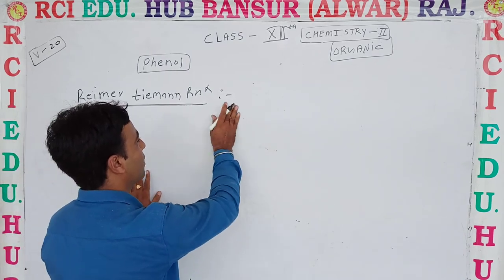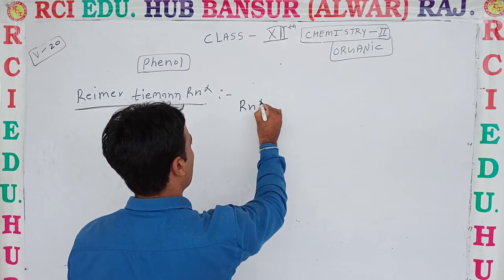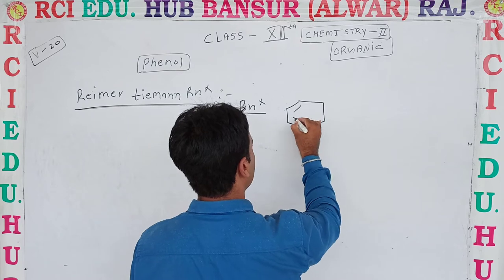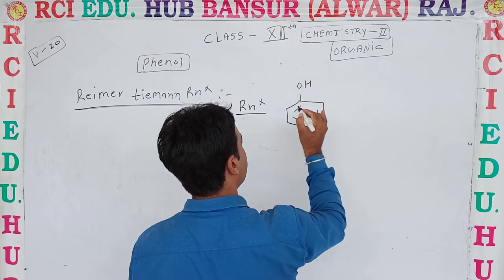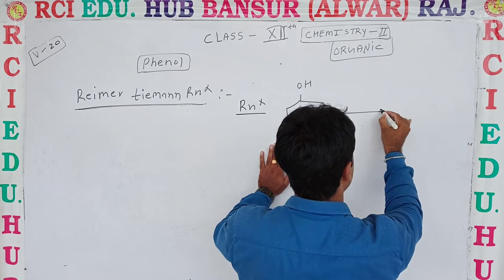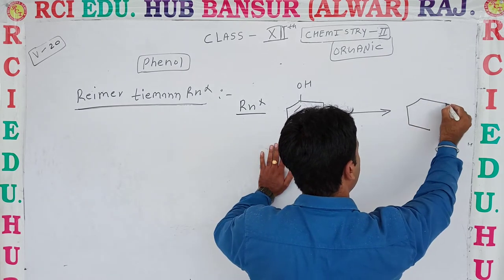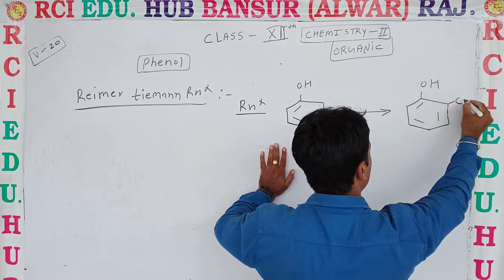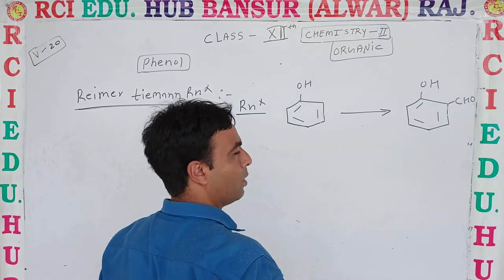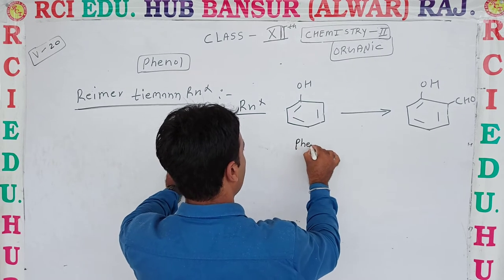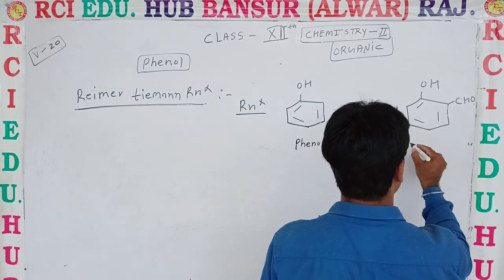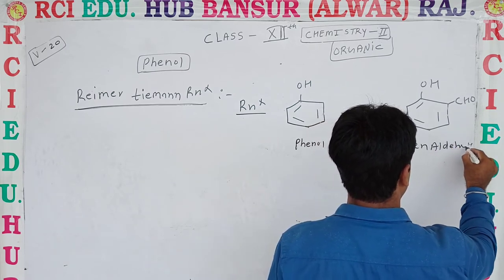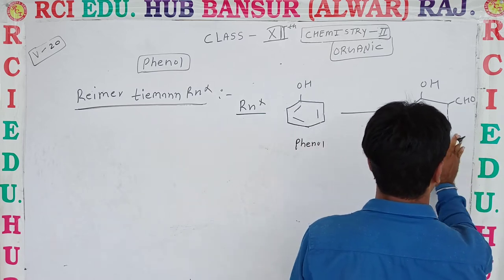Reimer-Tiemann reaction — how does it proceed and how is the product formed? Students, we are studying phenol reactions. The phenol reactions involve the benzene ring. The product being formed is benzaldehyde (salicylaldehyde). Here the O-H group is present and C-H-O group is attached — that is the aldehyde. So the starting material is phenol and the product is called salicylaldehyde.